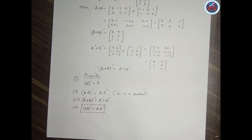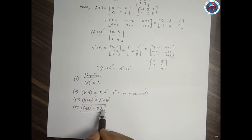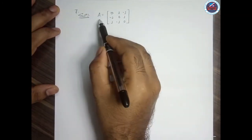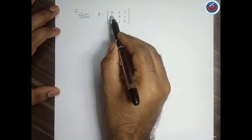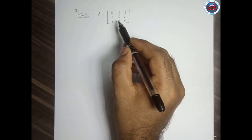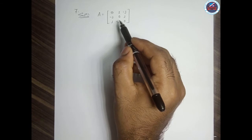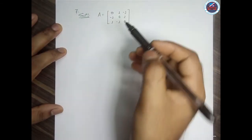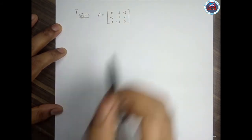Let us solve question number 7. Question numbers 4 and 5 are easy — for question 5 you need to verify (AB)^T = B^T·A^T, which you should try. Some problems are also given in the PDF. In question 7, we have matrix A = [0, 1, -1; -1, 0, 1; 1, -1, 0] and we need to show this matrix is skew symmetric.